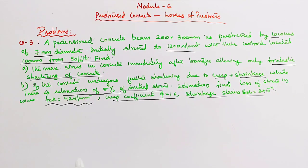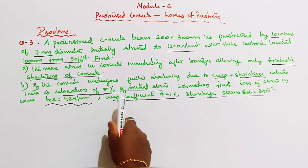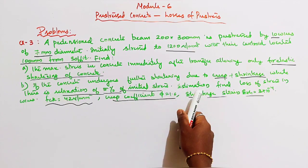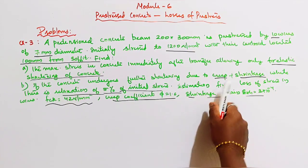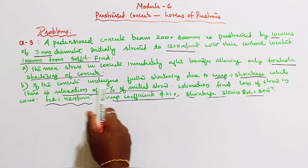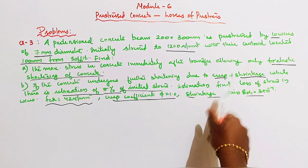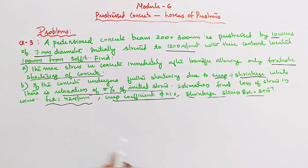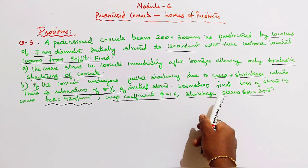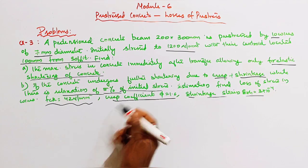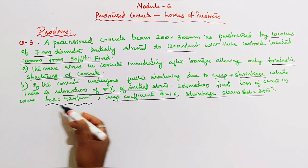Second part: if the concrete undergoes further shortening due to creep, shrinkage, and relaxation of 5% of initial stress — considering creep, shrinkage, and relaxation losses — we need to estimate the final loss of stress in wires.